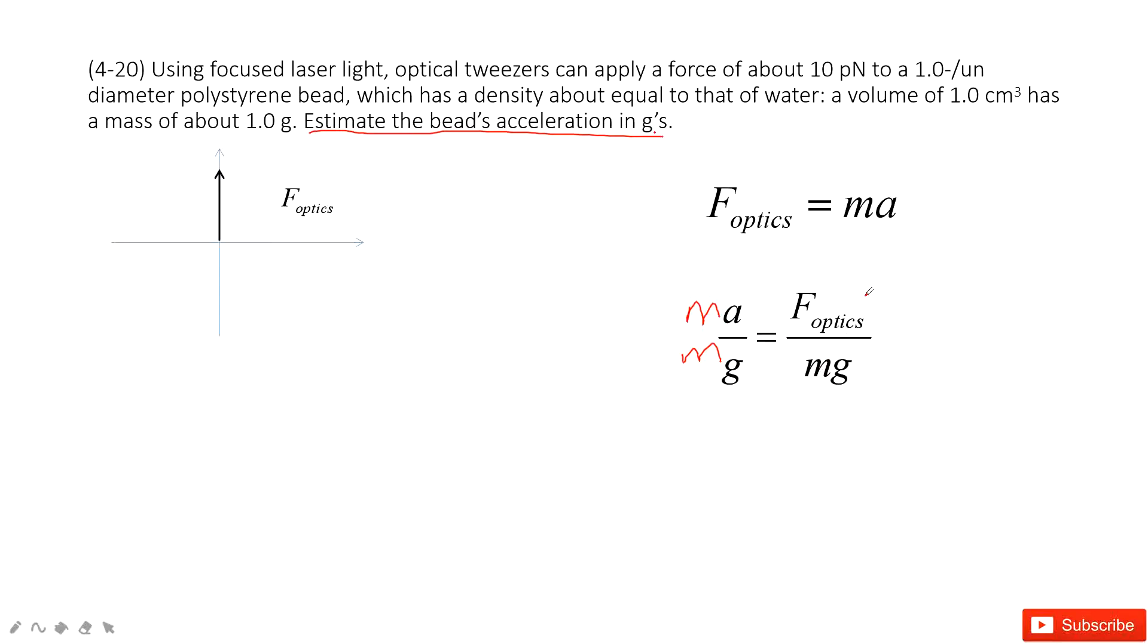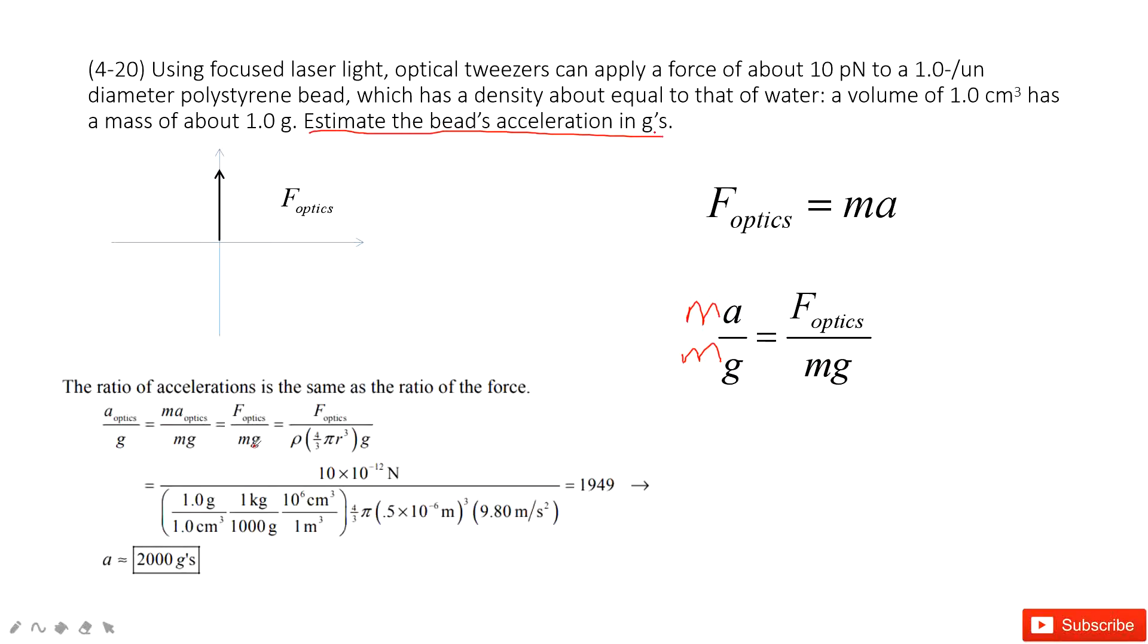And then next one, can you find the gravity on the particles? Sure. Because the gravity, we can see the gravity is mass times g. The mass is the density times the volume. So volume for a particle is this one. You can look at the math handbooks. The volume for a particle is just this one.